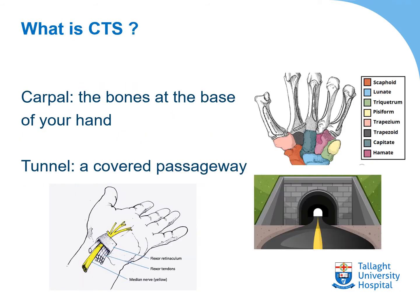So what is carpal tunnel syndrome? Carpal refers to the area at the base of your hand, where these colourful bones are seen in the picture — the area where your hand meets your wrist. On the palm side, there's a tunnel or a covered passageway in which tendons, nerves, and blood vessels travel, as you can see in the picture on the bottom left.